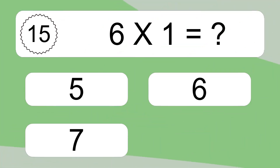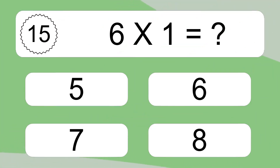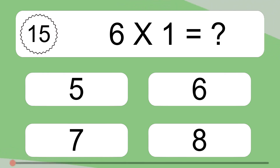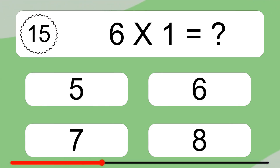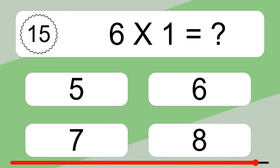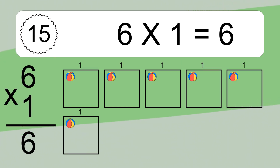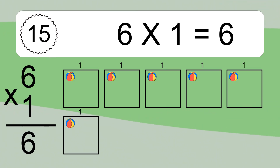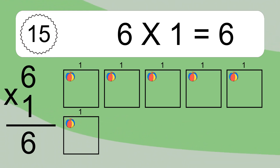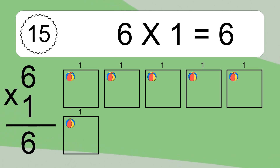6 times 1 equals what? 6 times 1 equals 6. We have 6 boxes, and each box has 1 colorful ball inside. If you count all the balls in all the boxes together, you will have 6 times 1 balls. This equals 6 balls.